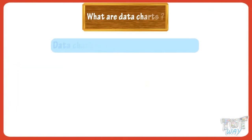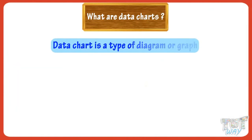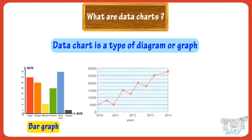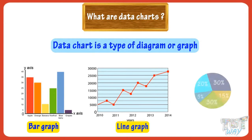A data chart is a type of diagram or graph where data is represented by various symbols, such as bars in a bar graph, lines in a line graph, or slices in a pie chart.